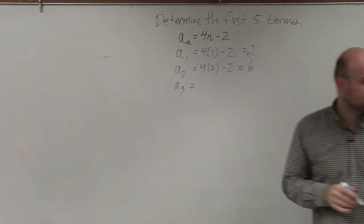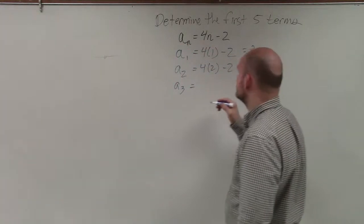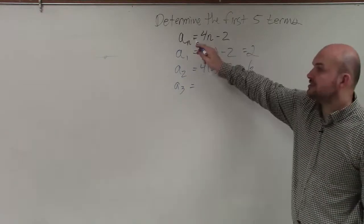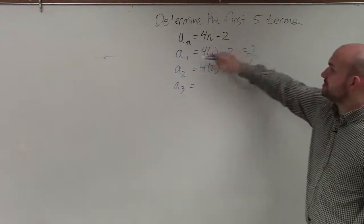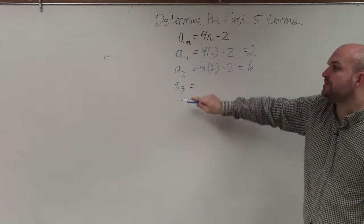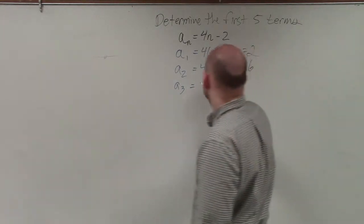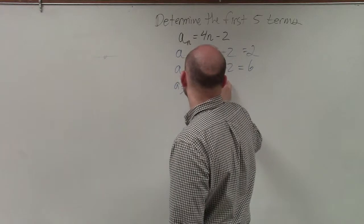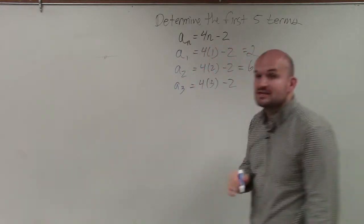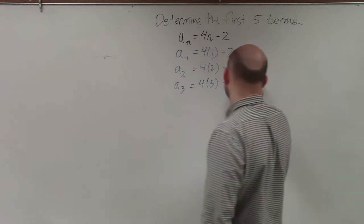You guys getting the pattern here? Why is it a 3? Because we're finding the first five terms. So you're going to plug in 1, 2, 3, 4, and 5 for n. That's going to be your first five terms. So therefore, I do 4 times 3 minus 2. 4 times 3 is 12 minus 2 is 10.